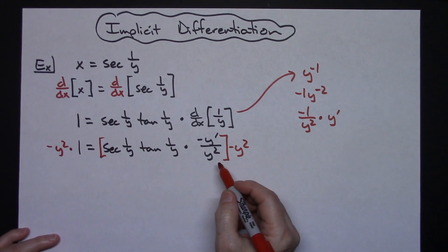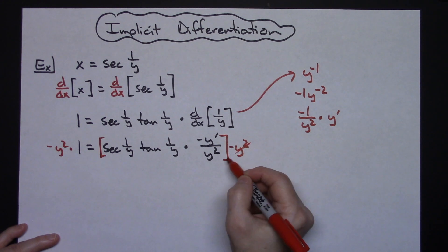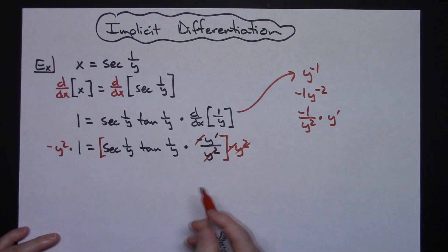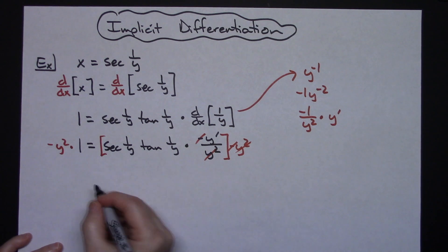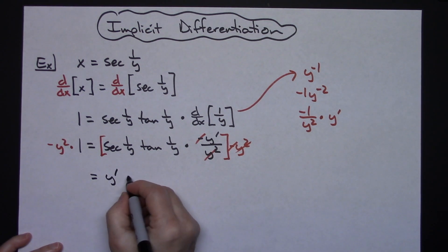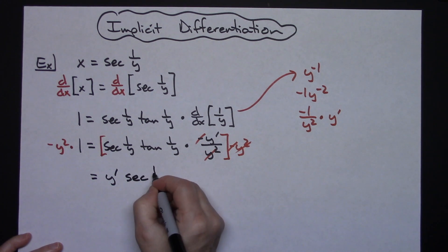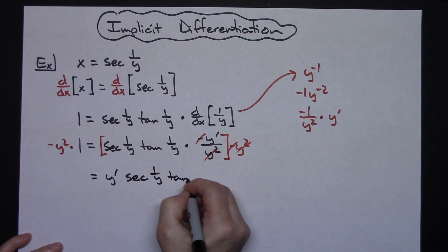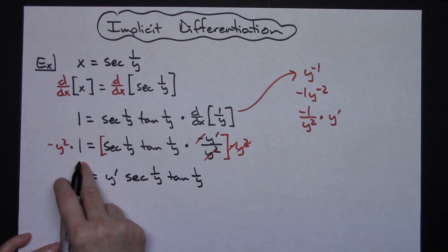When we do that then we're going to be able to cross out the y squareds. We'll be able to cross out the negative on this side which will then just leave us on the right hand side. I'm going to pull this out in front. We'll have the y prime and then we'll have a secant 1 over y and a tangent 1 over y. Left hand side there is just going to be a negative y squared.